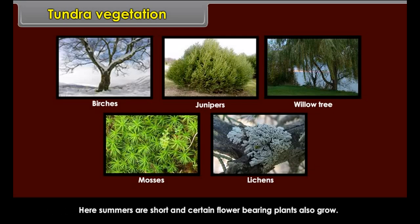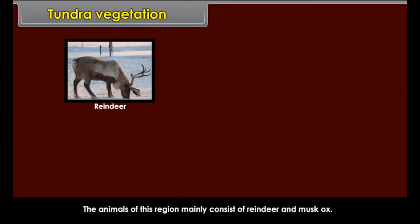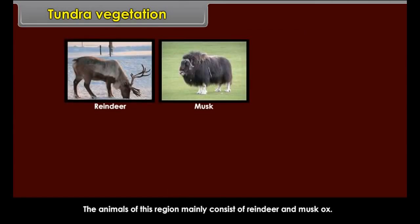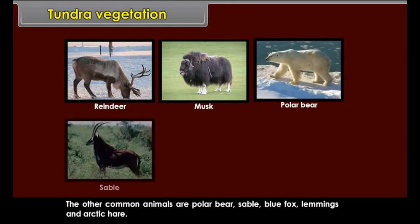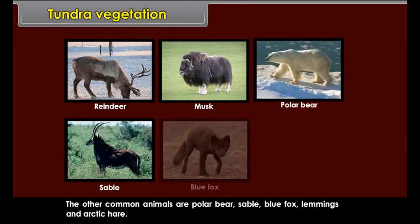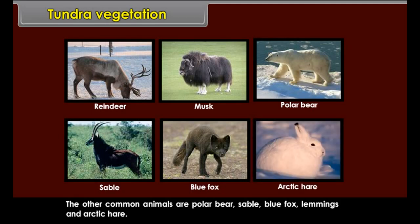Summers are short and certain flower-bearing plants also grow. The animals of this region mainly consist of reindeer and musk ox. The other common animals are polar bear, sable, blue fox, lemmings and arctic hare.